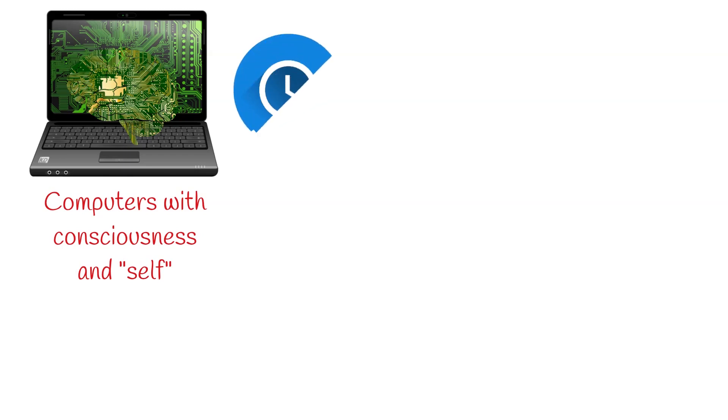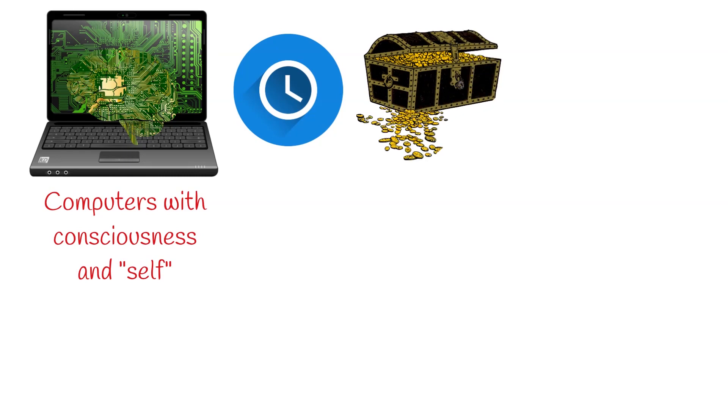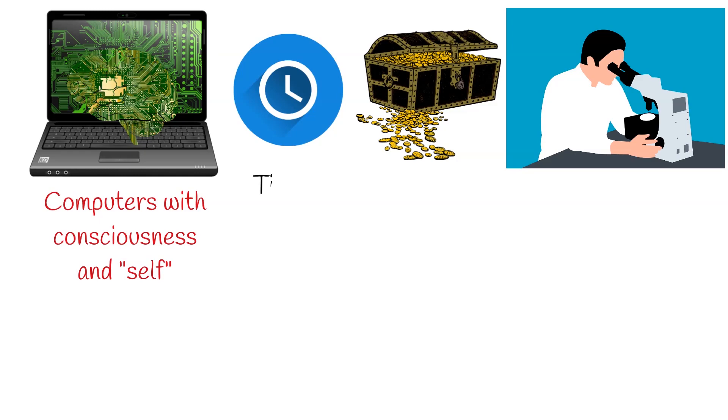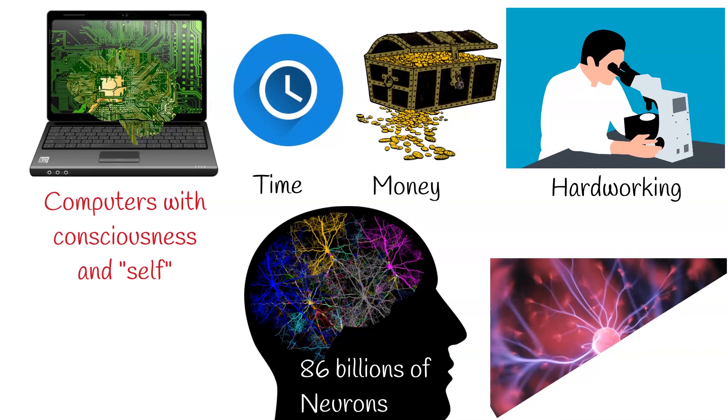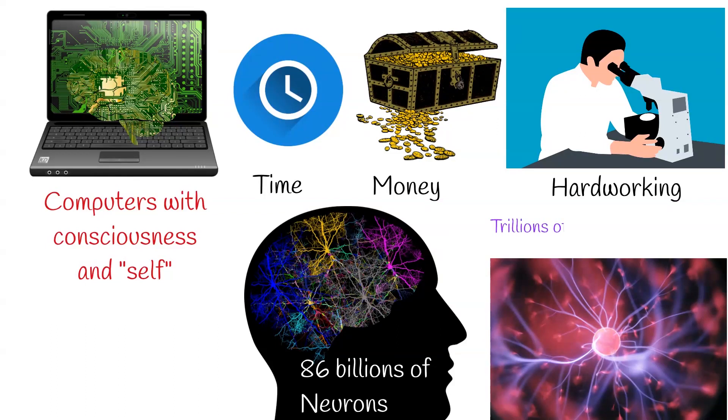But technically it is too difficult and requires lots of effort, invested time, and resources. To copy human brain, huge amount of computing power is needed, due to the large number of neurons in the human brain. We have 86 billion neurons in the brain. And each neuron has complex structure with trillions of functional molecules. These molecules act as small computers.